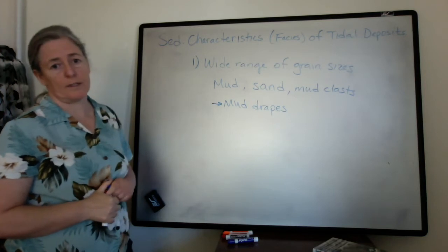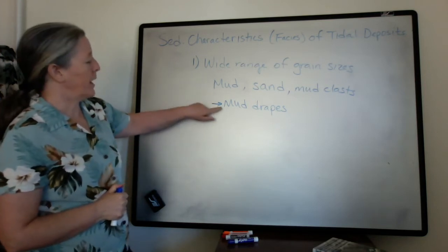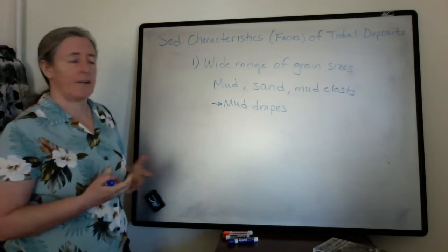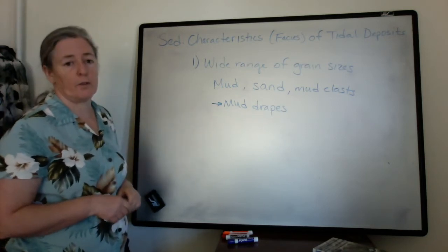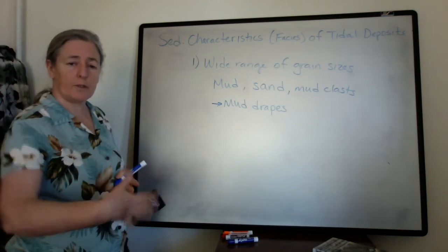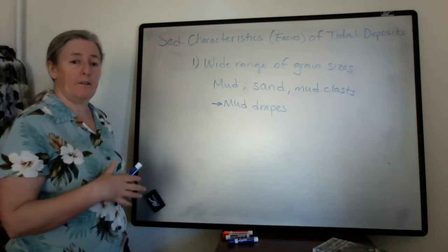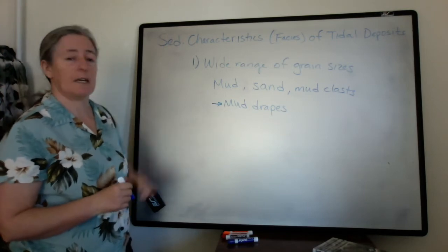So where you have layers of mud inside cross stratification, that indicates that the flow speed was high enough to produce that cross stratification, but then slow enough at another period of time that you can get this mud accumulating.